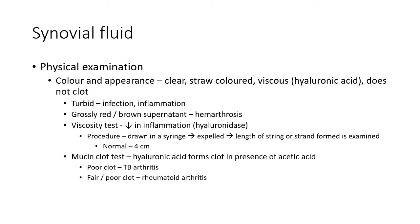Synovial fluid is found around joints such as the knee, ankle, hip, and elbow. Its evaluation is useful in diagnosing joint disorders like infective arthritis and gouty arthritis. The specimen is collected in three sterile tubes — one with EDTA, one with fluoride oxalate, and one plain — just like pleural fluid. Normal synovial fluid is clear, straw-colored, and viscous due to the presence of hyaluronic acid, and it normally does not clot.